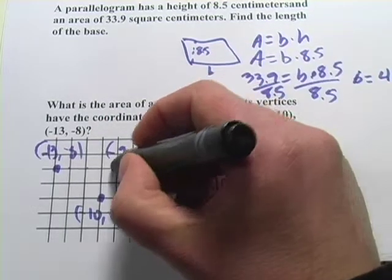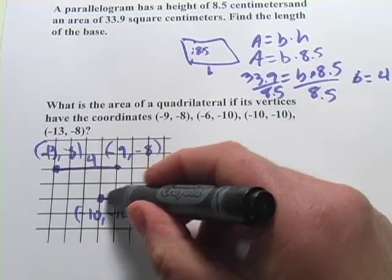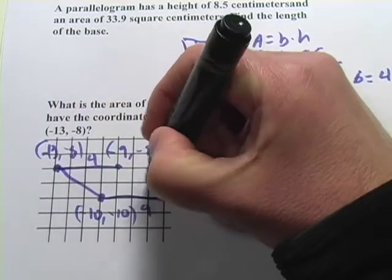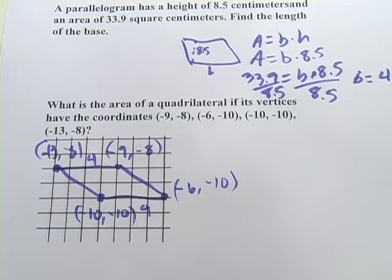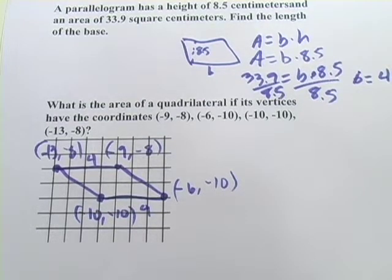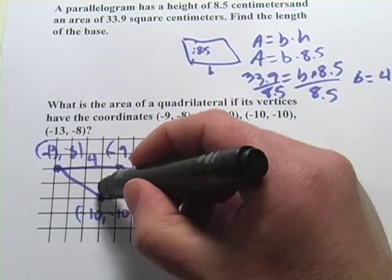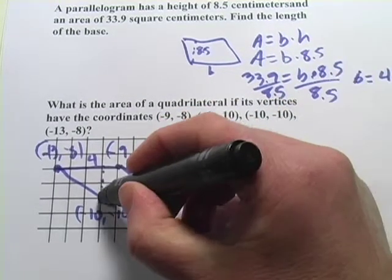It does look like we have a parallelogram here. We've got a 4 length here and a 4 length here. And then we've got these diagonals. So that looks like a parallelogram. The base is 4. What is the height? Well, that's pretty easy to tell because it's 2 units exactly.